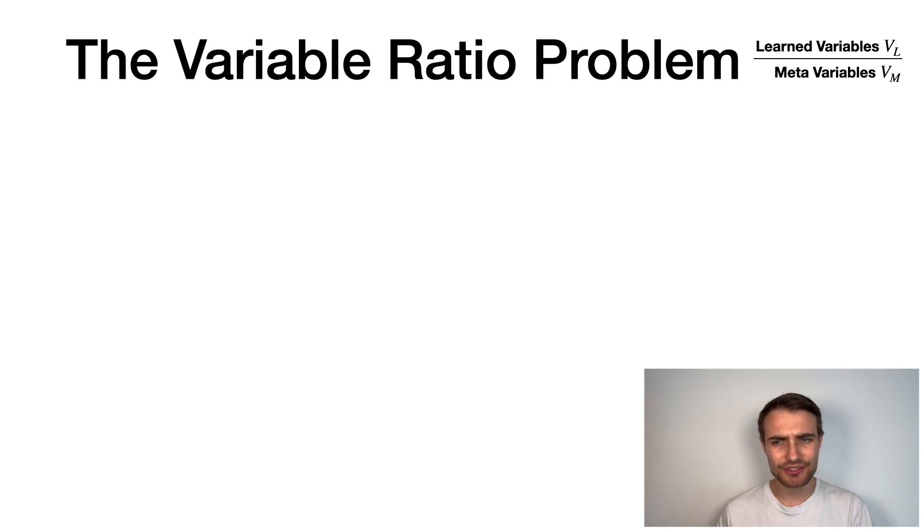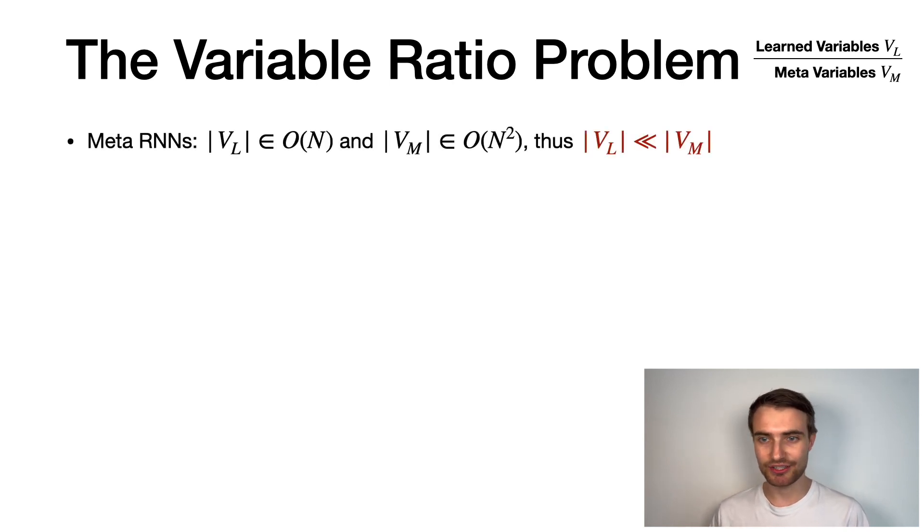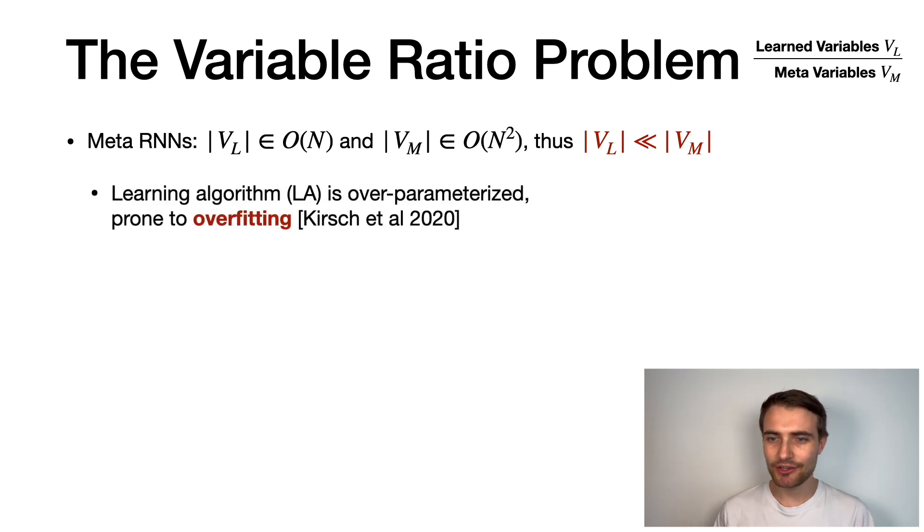So why can we not just use the standard meta-recurrent neural network? The problem is that there is really not much memory available for learning. We refer to this as the variable ratio problem. An RNN has O(N) activations and O(N²) weights. Thus, there are only O(N) variables available for learning, V_L, whereas O(N²) meta-variables, V_M, encode the learning algorithm. And this makes the learning algorithm overparameterized and prone to overfitting.